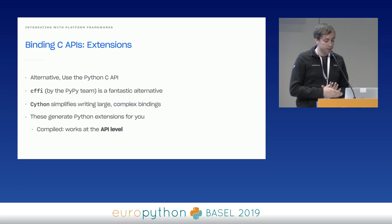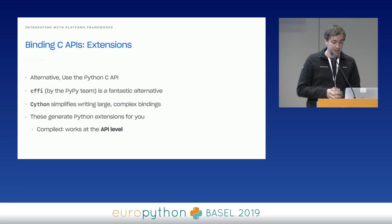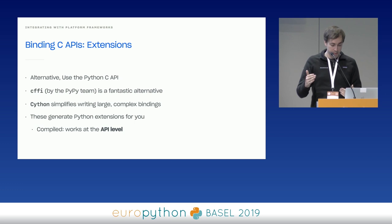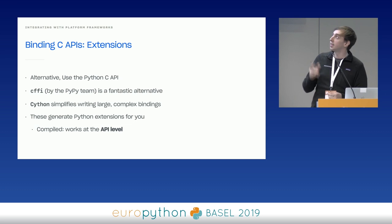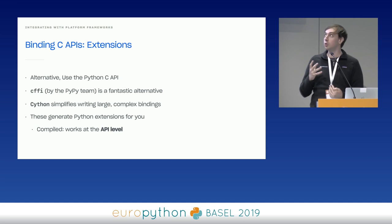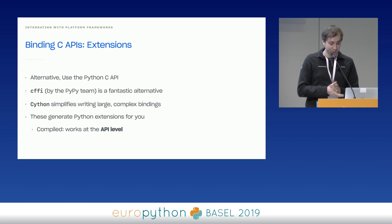Ctypes is the basic way, but there's a much better way. The alternative is to write Python extensions — written in C using the Python C API — which are much better because they let you leverage the compiler, which is safer. Rather than just jumping and hoping for the best, you generate an actual C extension that is compiled. CFFI by PyPy is amazing. We also use Cython in some cases where we need really complex bindings. These generate a C extension that uses the real header of the C library you're targeting. So if you make a type mistake, the compiler will yell at you — and the earlier the compiler yells at you, the better.